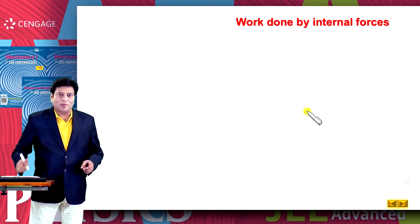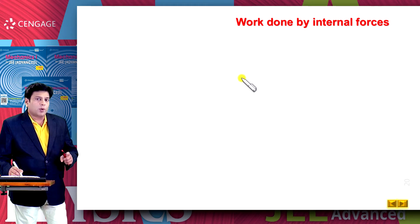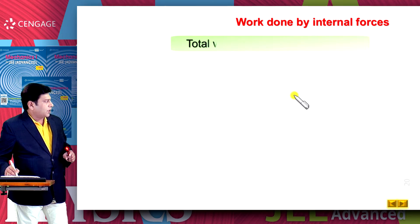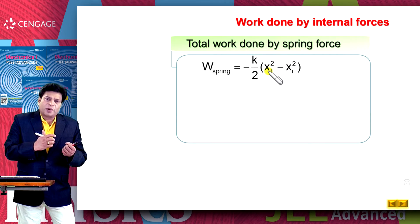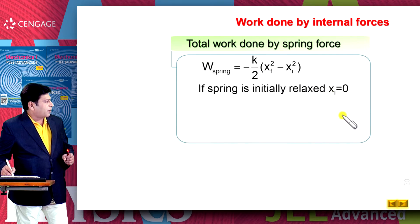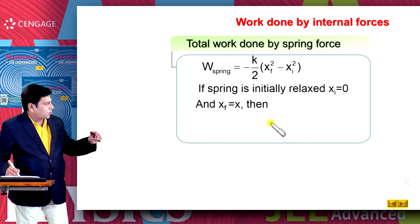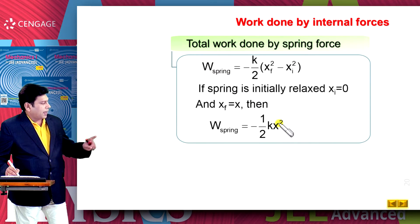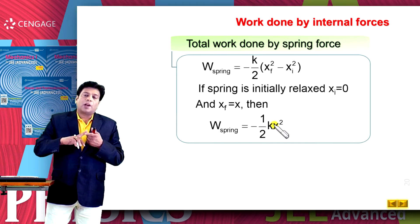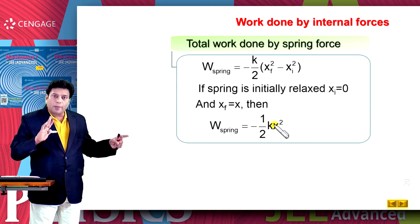Let us discuss work done by the spring force. We can write work done by the spring force equal to minus (k/2)(x_final squared minus x_initial squared). Suppose a spring is initially relaxed, that means x_initial equals zero. If we substitute x_initial equal to zero and x_final equal to x, this expression becomes W_spring equal to minus (1/2)k x squared. Here x is the deformation of the spring when it was initially at the relaxed position. Remember, this work done is also independent of the frame of reference.